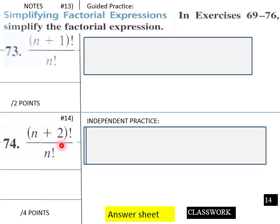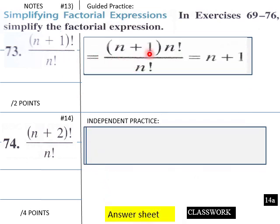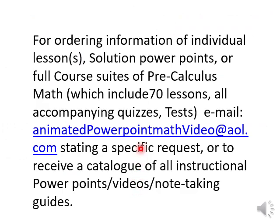Now try number 73: simplify the factorial expressions. Expand them out and cancel — that's the hint. For (n+1) × n! / n!, the n! cancels, so it equals n+1. The remaining one students will expand on their own. That is part two of 8.1 precalculus math.